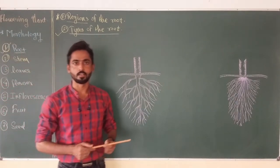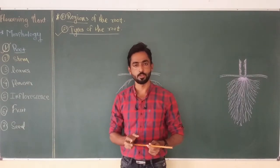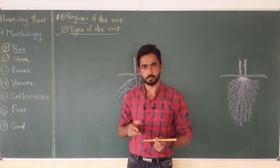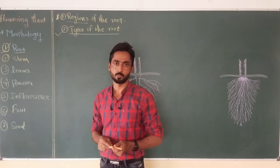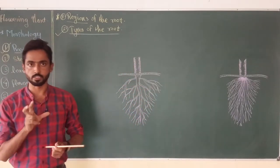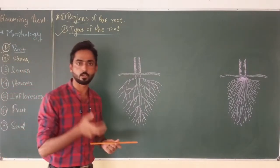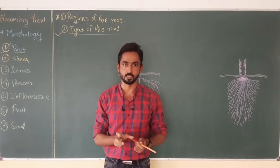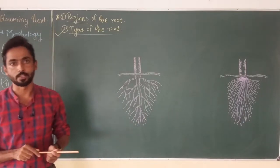Hello everyone. I have started a new video series on the topic flowering plants. In my last few videos I discussed in detail about the different organs present in the flowering plant and different regions present in the roots of angiospermic plants. The five important regions in the root are the root cap region, region of cell division, cell elongation region, root hair region, and maturation region. These five regions play an important role in the root of angiospermic plants.